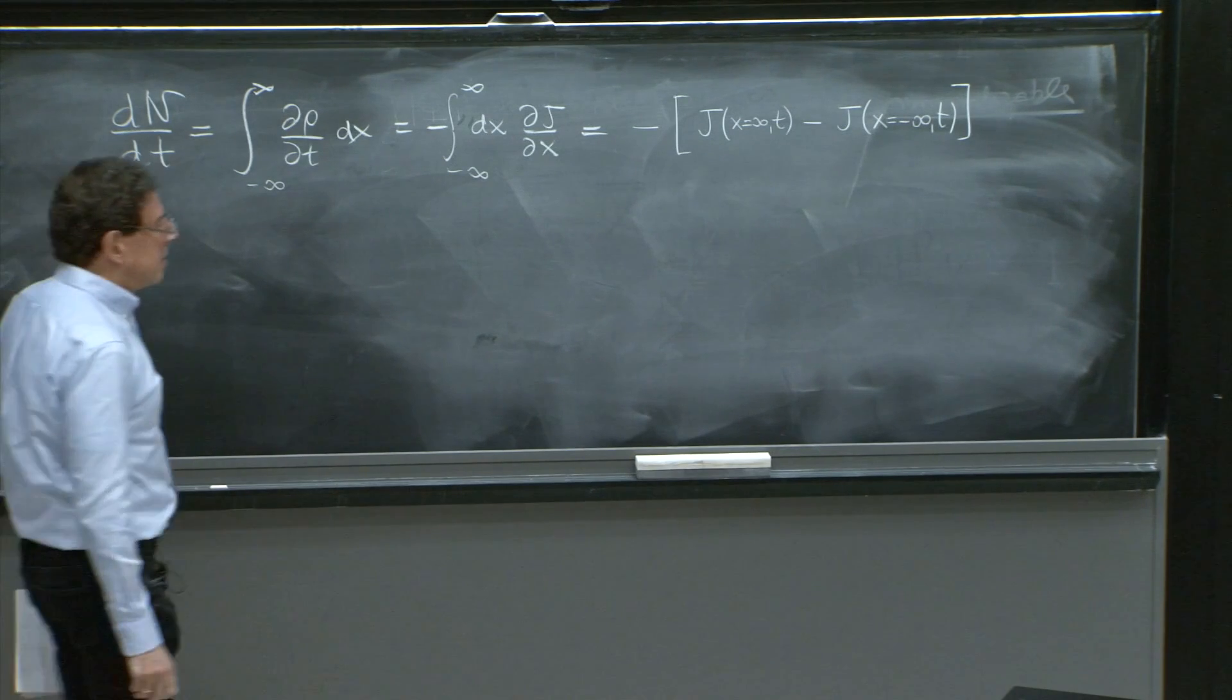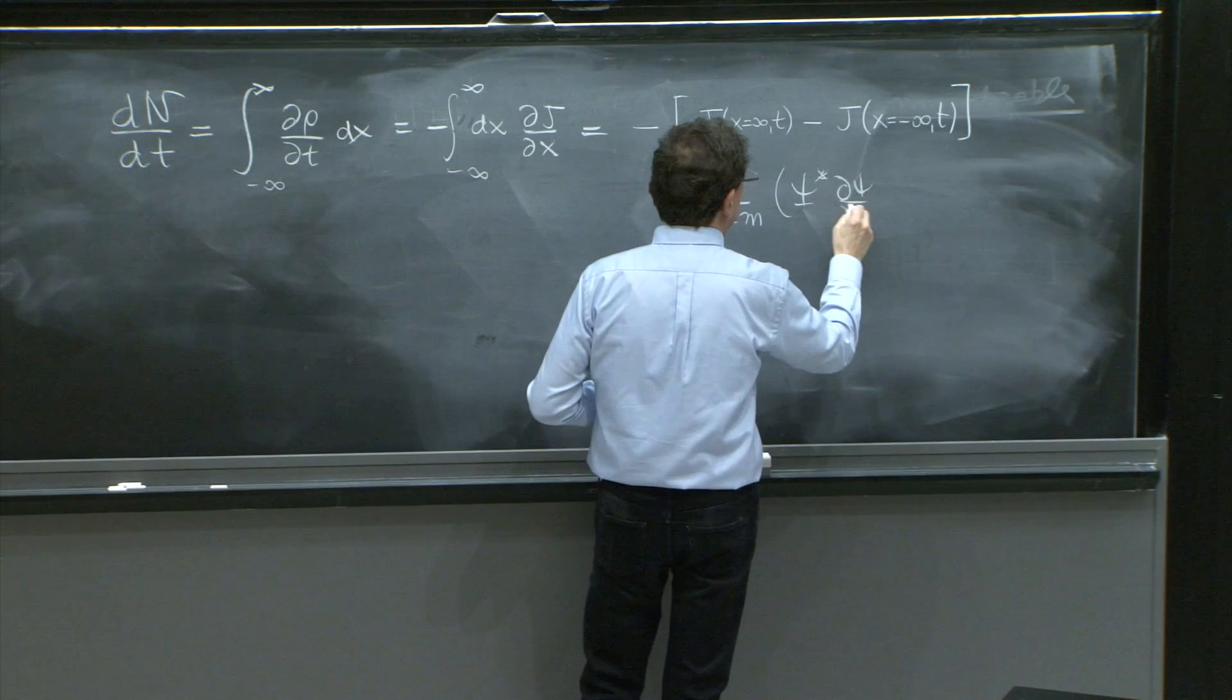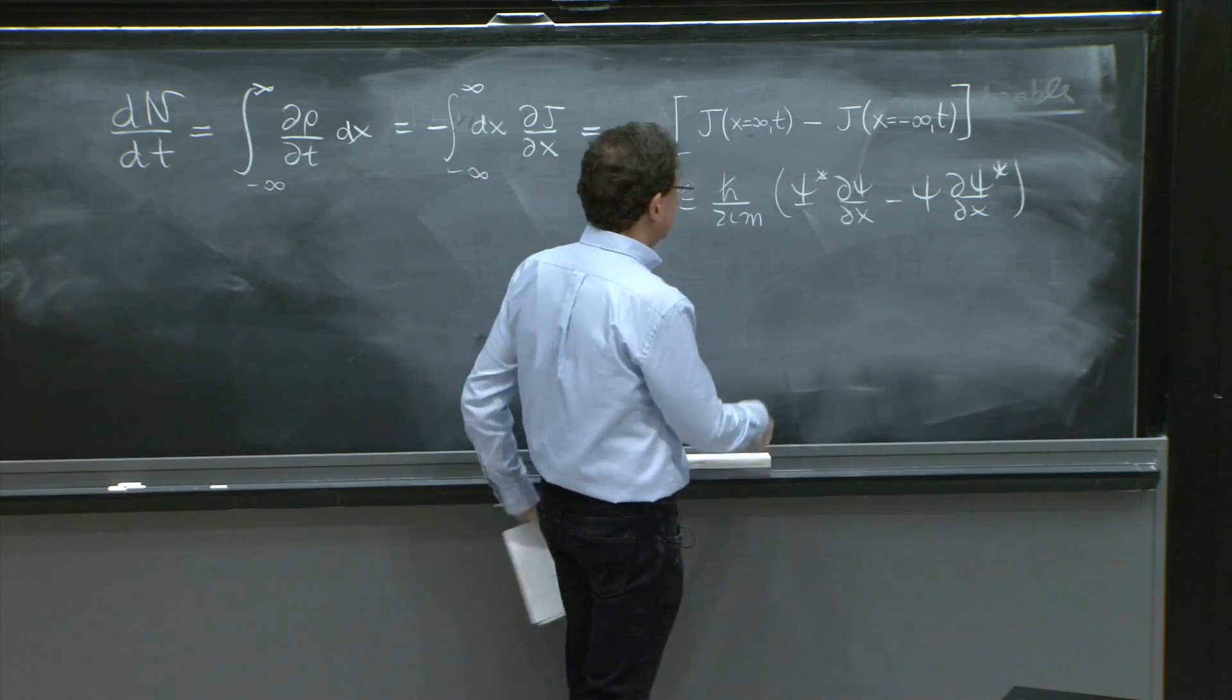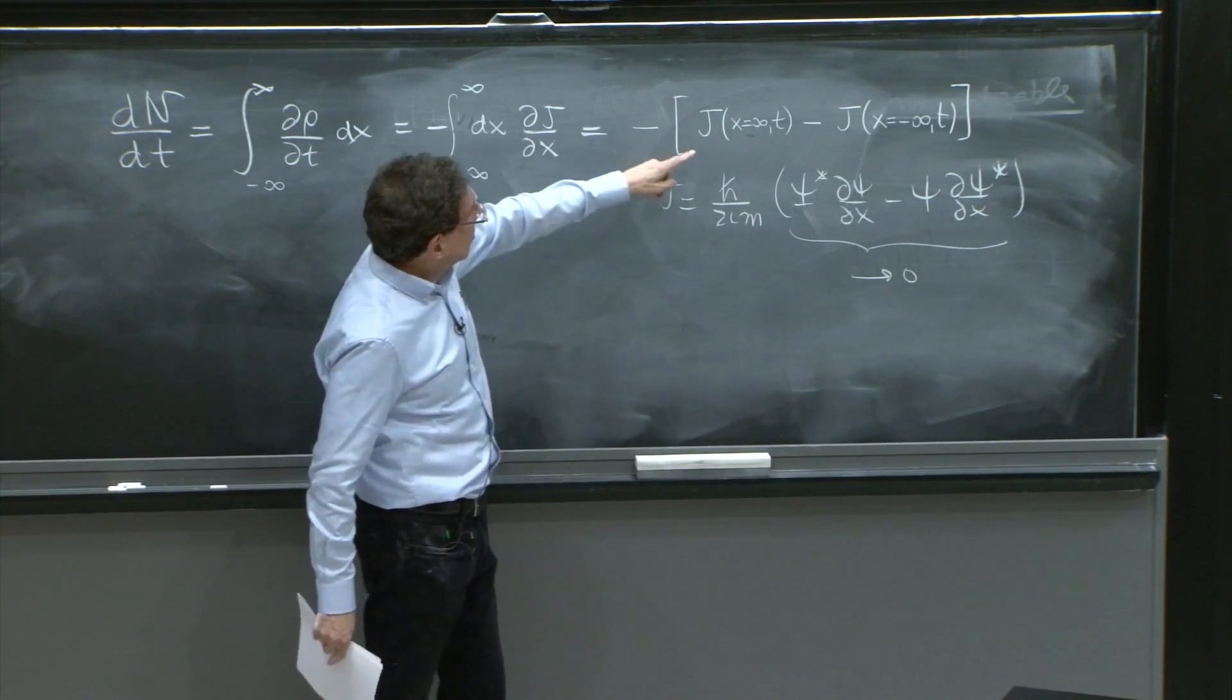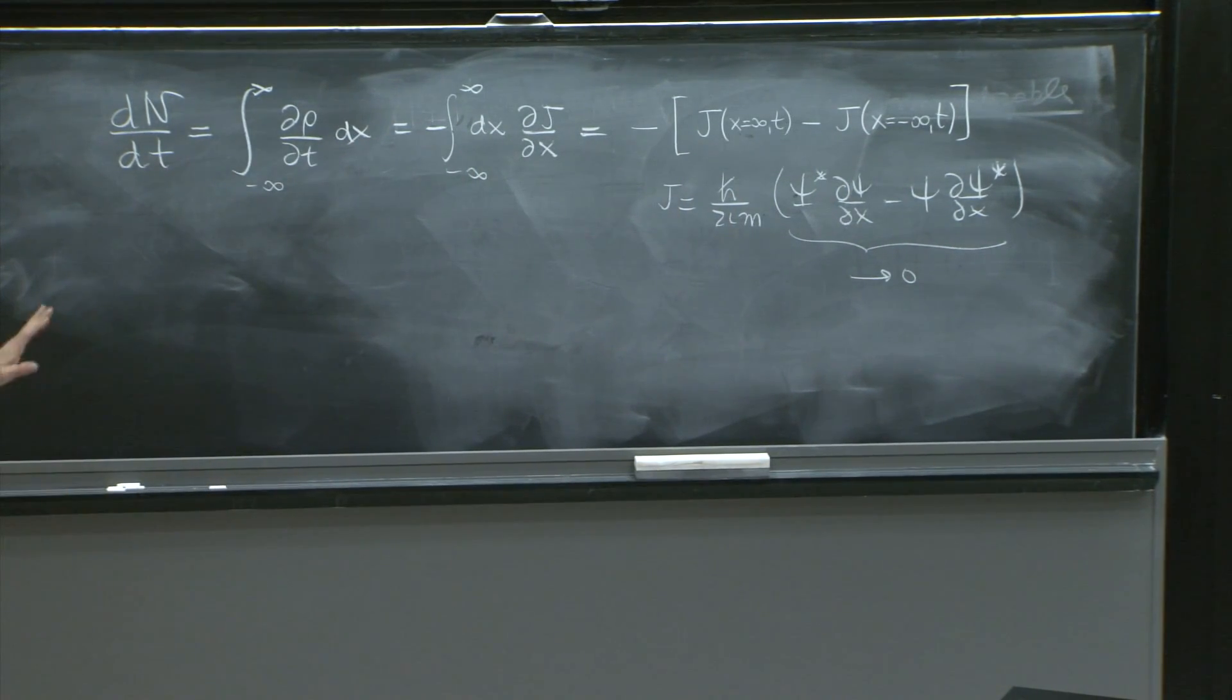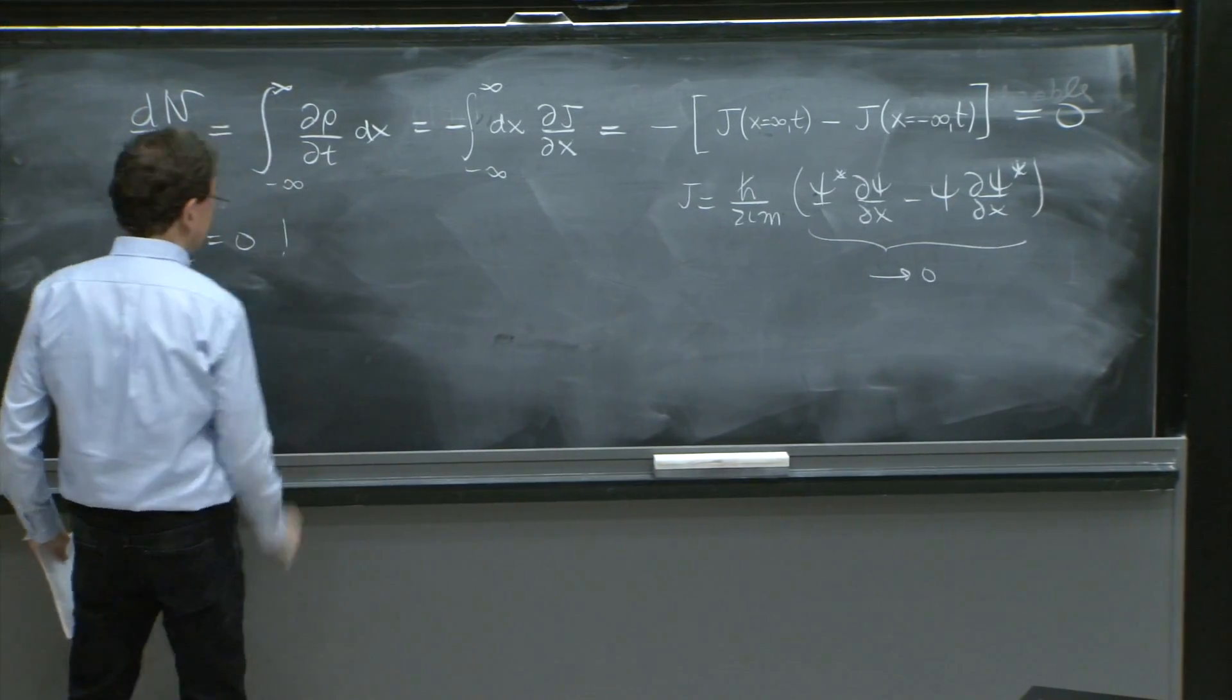And as we more or less hinted at it before, since the current is equal to h over 2i m psi star d psi dx minus psi d psi star dx, as you go to plus infinity or minus infinity, these things go to 0, given the boundary conditions that we put. So this is equal to 0, because psi or psi star go to 0 at infinity and the derivatives are bounded at infinity. So this is 0, the n dt is 0, all is good.